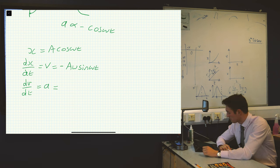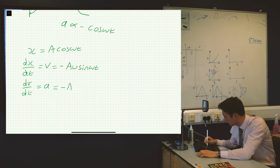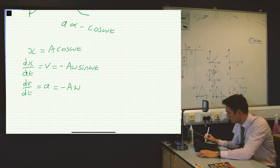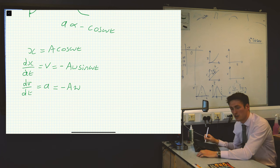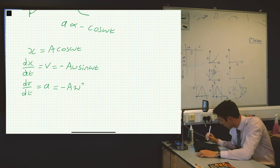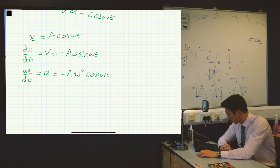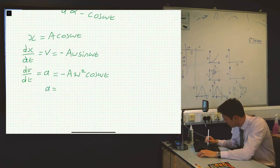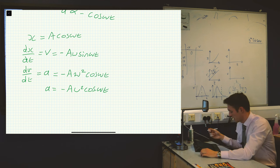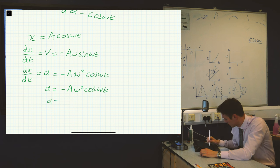From our differentiation rules, taking the derivative of sine x gives us cosine x with no negatives. So we keep the negative sign, we keep the amplitude A, and we get another omega from the chain rule — because when you differentiate a sine or cosine function with a number next to the variable, that number comes out. So you get minus A omega squared cosine omega t for the acceleration.